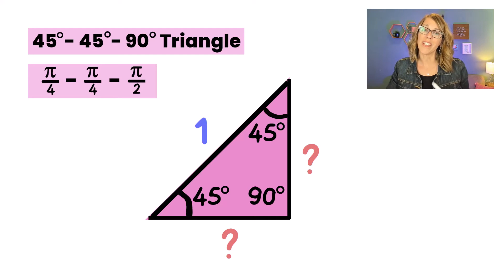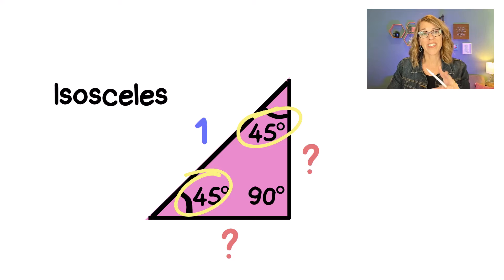Let's solve 45-45-90 triangles for their missing sides. The first thing I notice is that I've got two equal angles, making this an isosceles triangle. So those two question mark sides that I'm solving for are equal, let's call them both X.